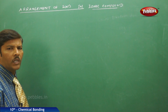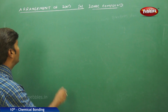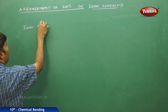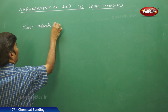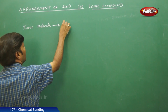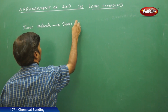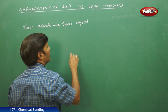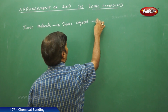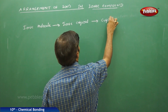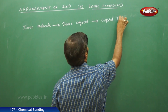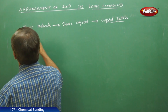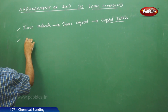After understanding ionic bond formation, let us discuss further. An ionic molecule is also called an ionic crystal, and an ionic crystal is sometimes also called a crystal lattice. What do we mean by the word lattice here?